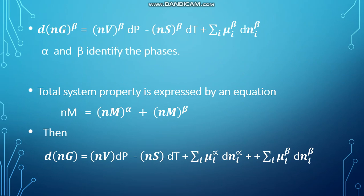So here α and β identify the phases. G is Gibbs energy, V is volume, S is entropy. As you already know, P and T are the pressure and temperature, N is the number of moles, and μ is the chemical potential.